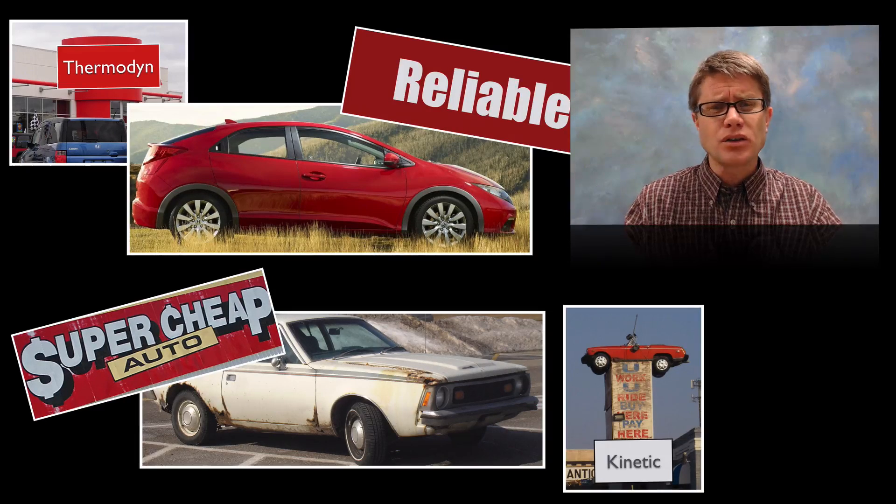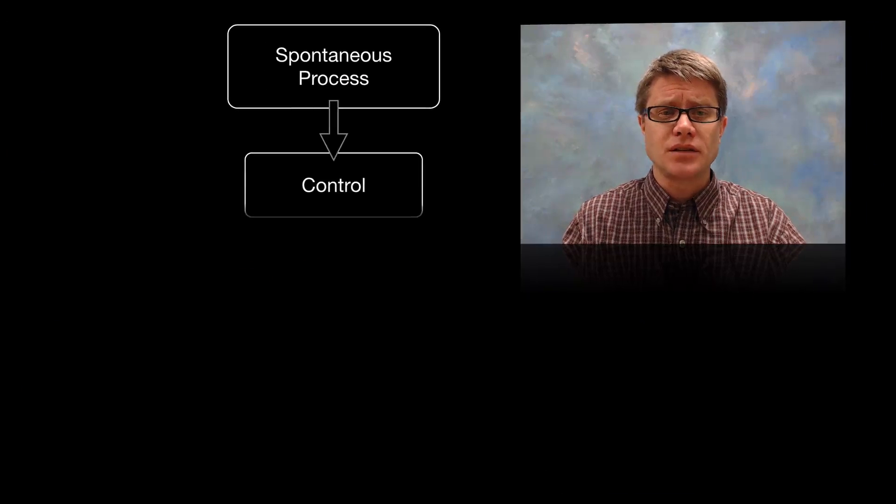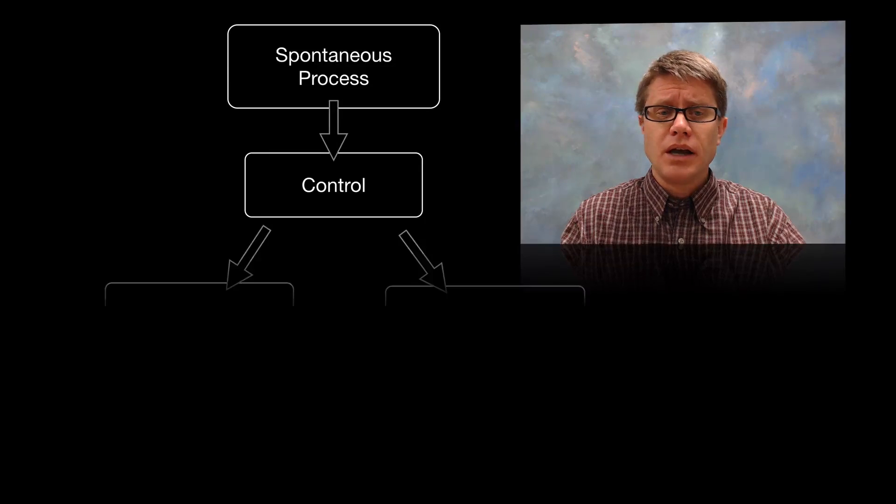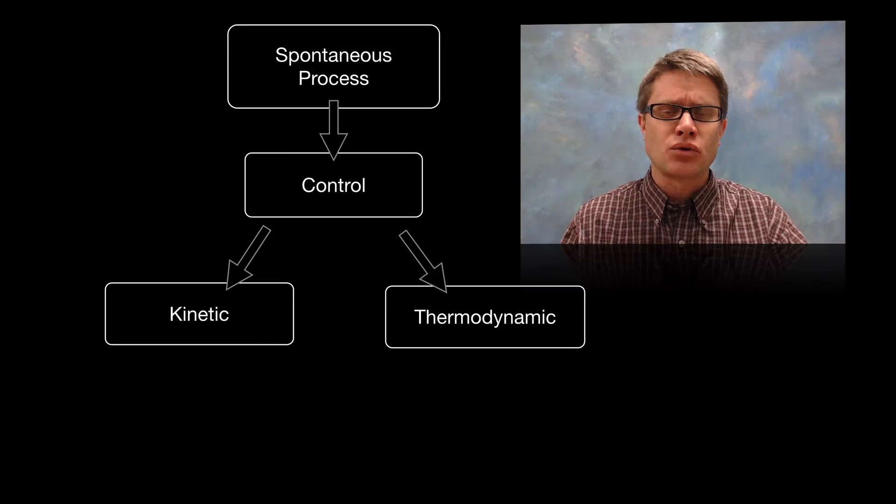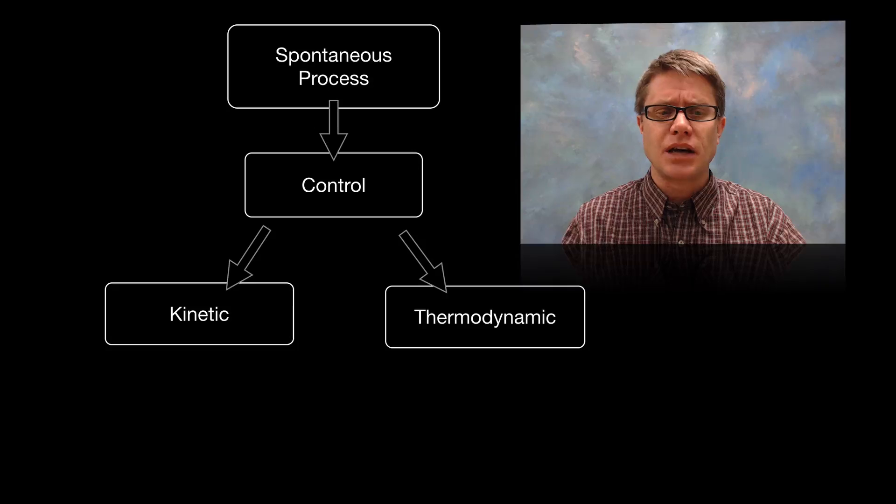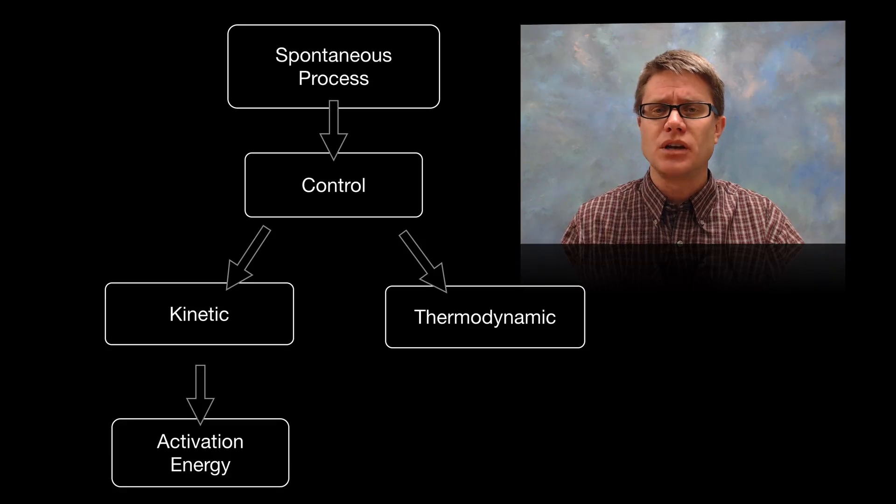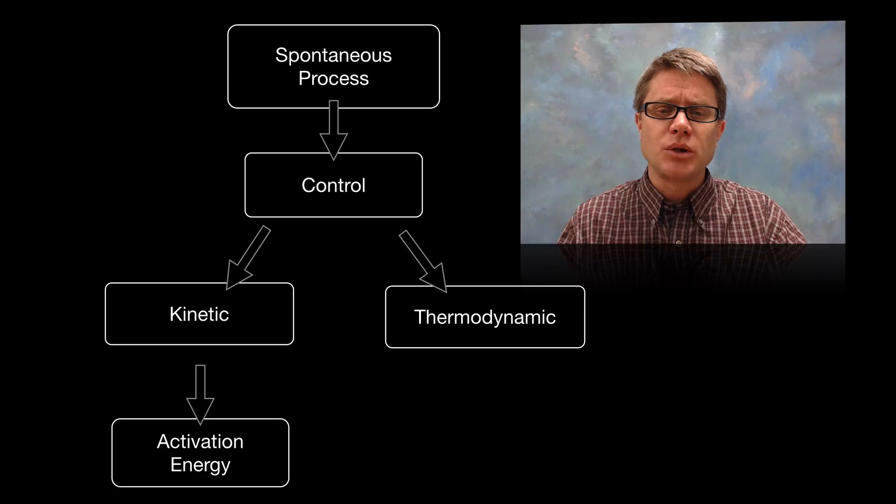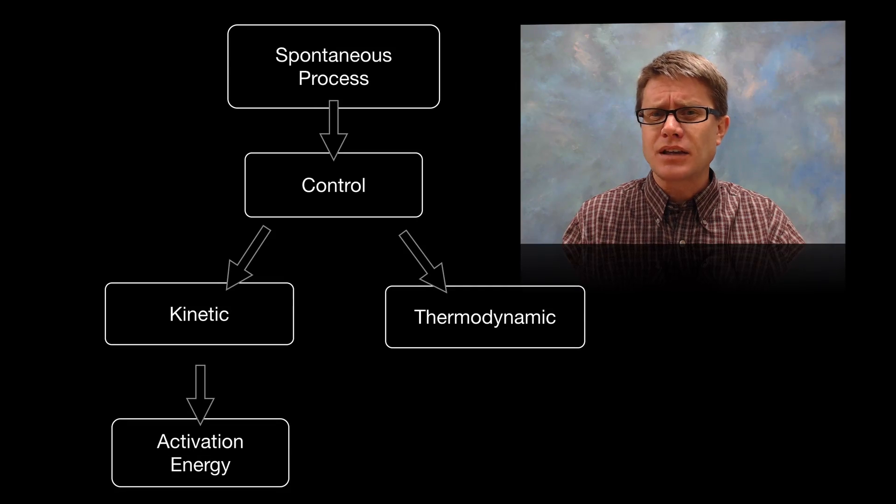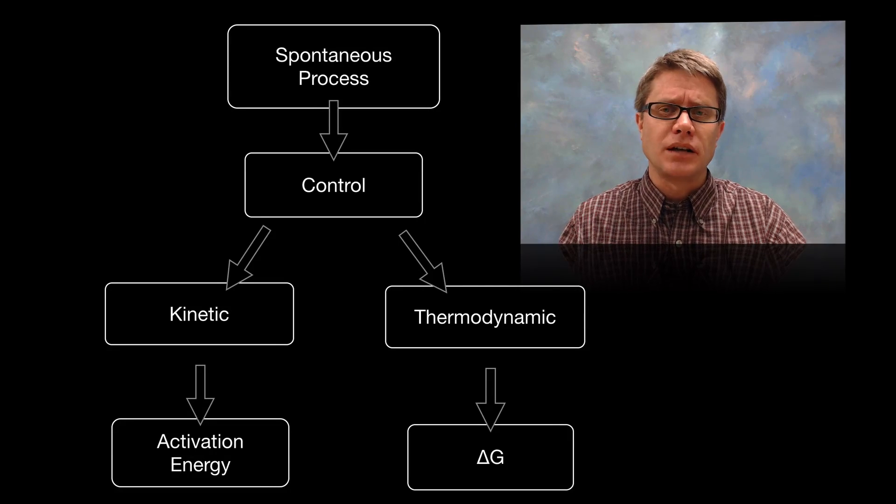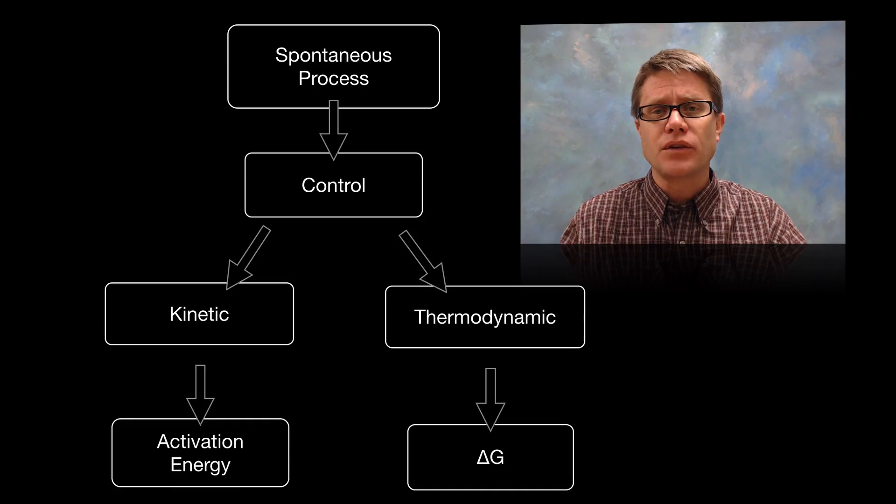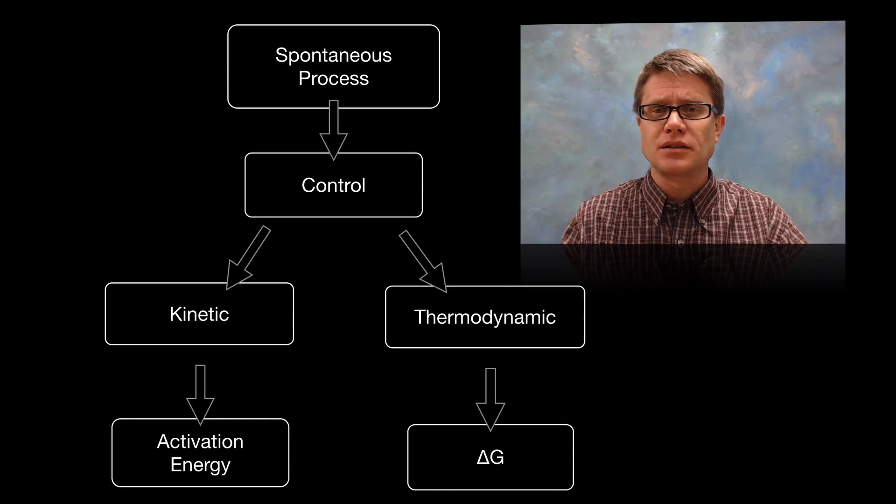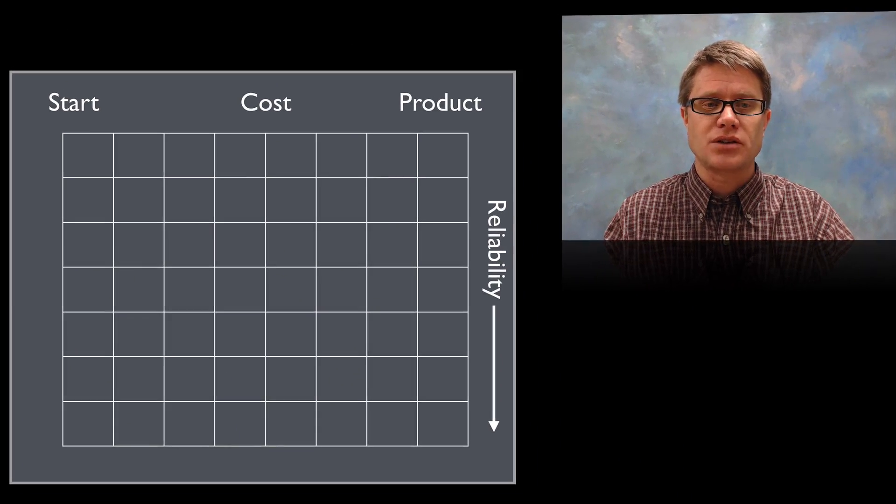And so this choice is also being made in spontaneous processes. In other words there's control. And so it could either be kinetic control. And that kinetic control lots of times is based on activation energy. It's the cost of that process. And then we also have thermodynamic control. What's governing that? That's going to be the change in free energy, or our delta G. How much difference in free energy is there between the reactants and the products in this downhill reaction.